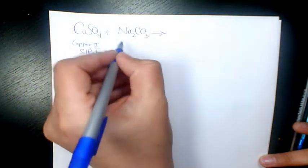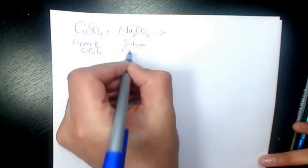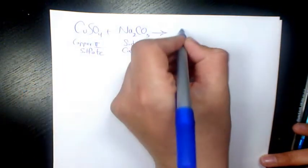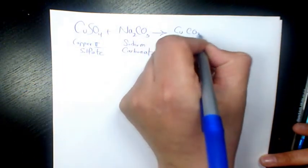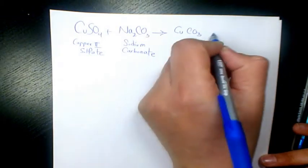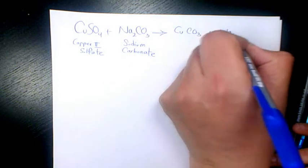And Na2CO3 is sodium carbonate. So when they react we're gonna have CuCO3. Both of them are 2, so you don't write anything else. Plus Na2SO4.